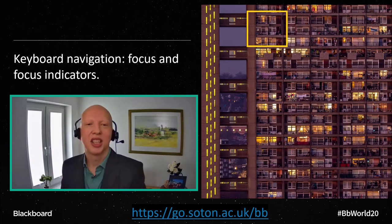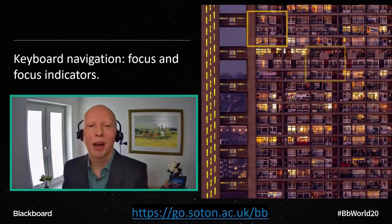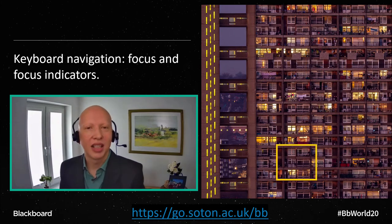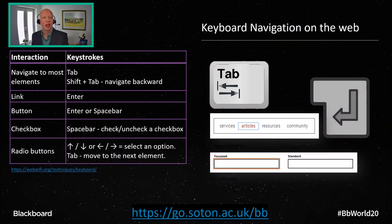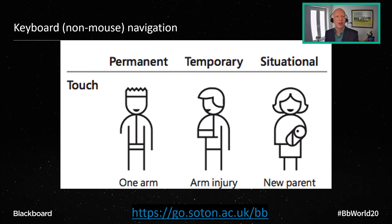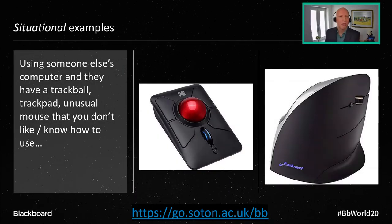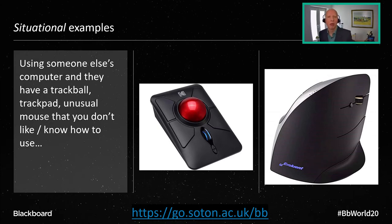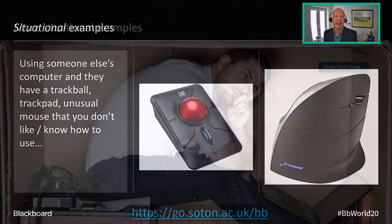Looking at keyboard navigation and focus indicators — have you noticed how if you tab around a web page, a box might move around the different elements? We can use keyboard shortcuts to navigate our way around a web page. Keyboard navigation is not only specifically for users of the keyboard — it's used by other assistive technologies, for example mouse stick, sip and puff. Focus indicators are also used by screen readers, and power users love keyboard shortcuts. Thinking about situational impairments, you might have needed to use a colleague's computer with a strange mouse you didn't get on with — if you can use the keyboard, that's a useful workaround.